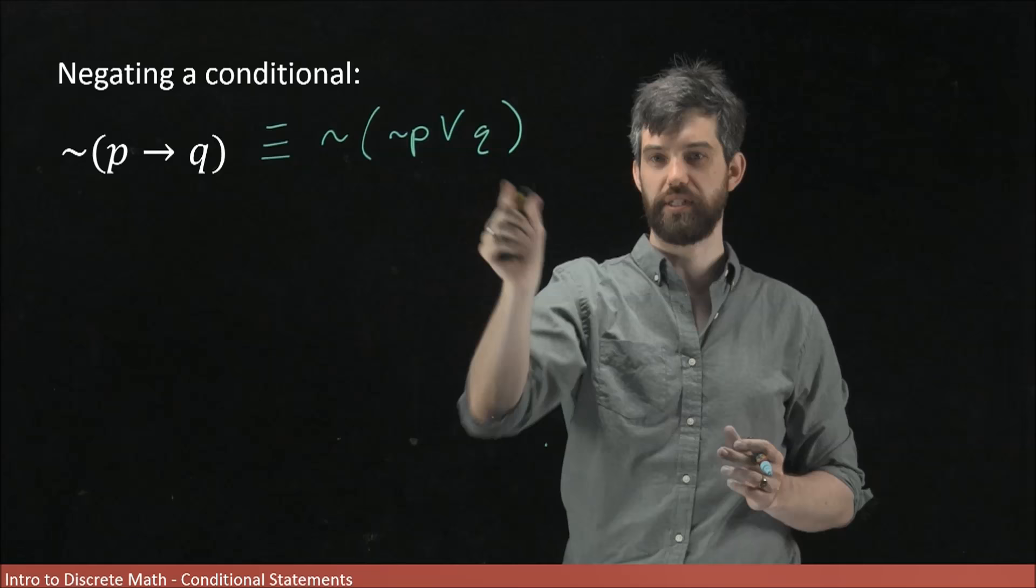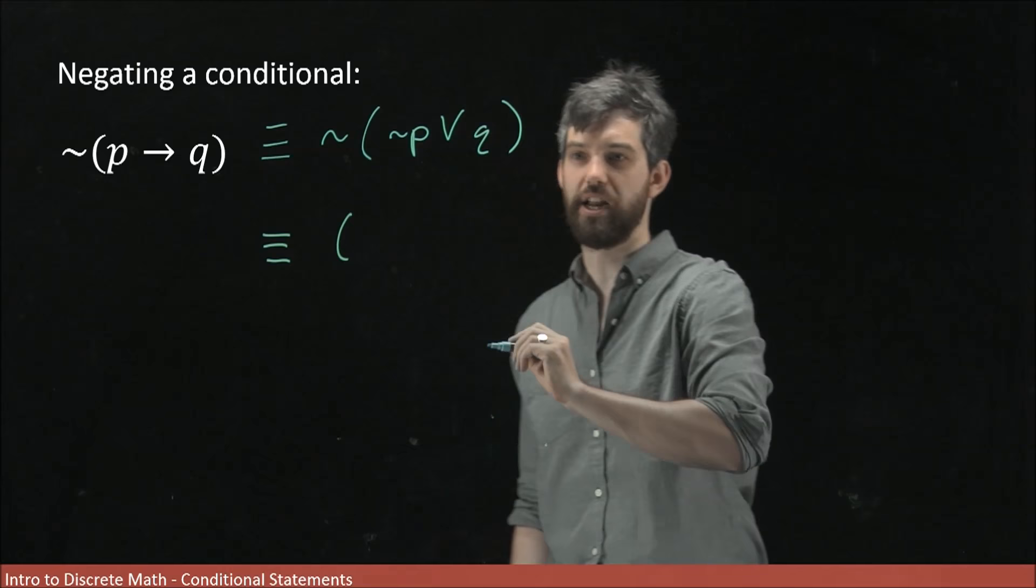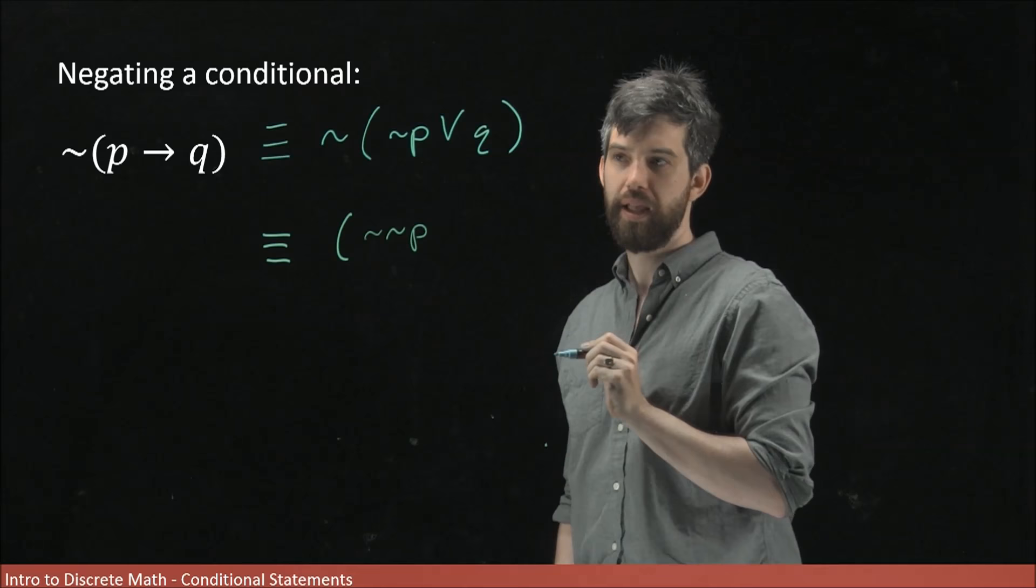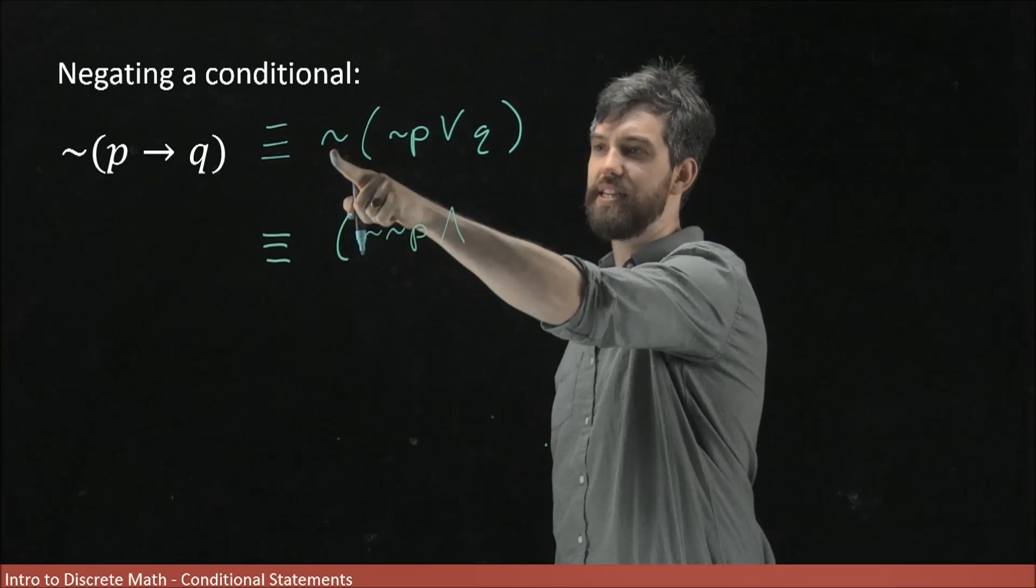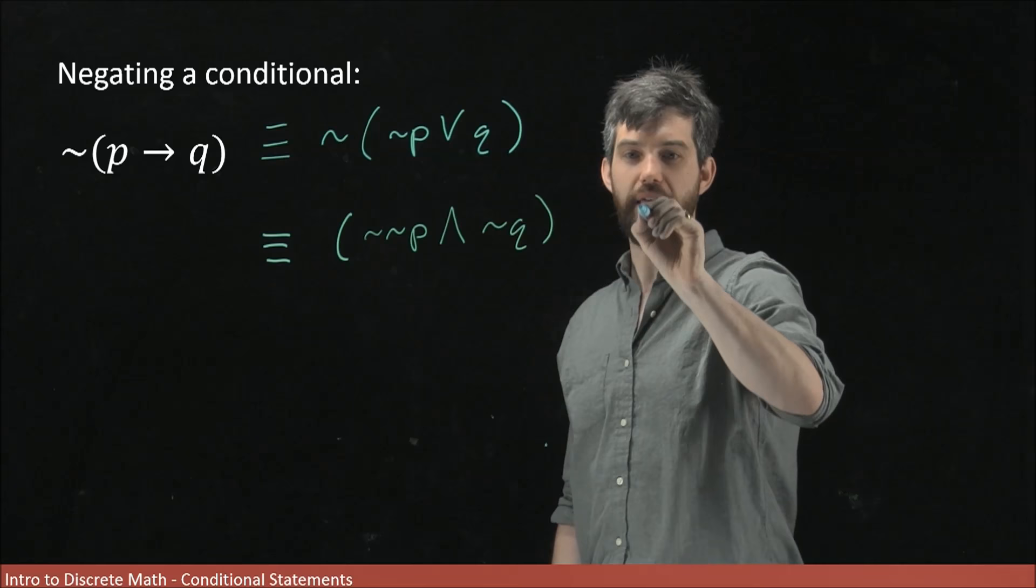So in other words, I'm going to claim that this is logically equivalent to—the first thing is I'm going to bring the not to the inside so it goes not not p, and then it flips the or to an and, and then I take the not and put it in front of the q as well, so I go not q. And this was de Morgan.